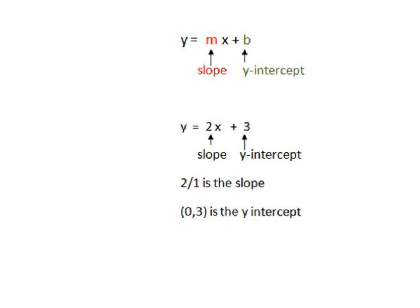When we write equations in 8th grade, they're always going to be in what's called slope-intercept form, which means we're going to have y equals a number times x plus or minus a number. The number that's in front of x we call m, and that stands for the slope. The number that's being added or subtracted at the end is our y-intercept number.